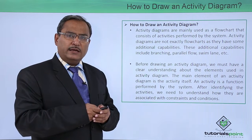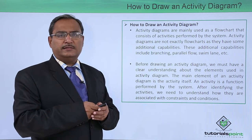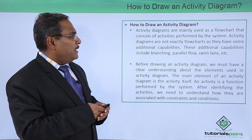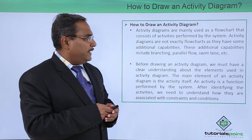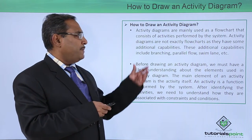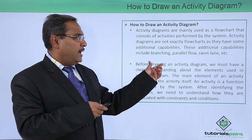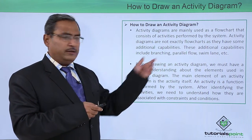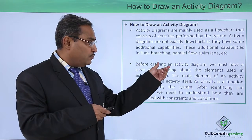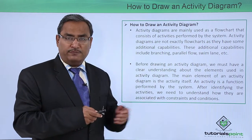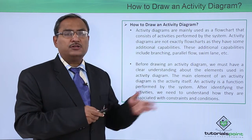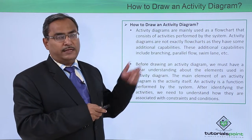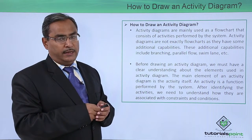What is an activity? An activity is nothing but one operation in a system. Activity diagrams are not exactly flowcharts, as they have some additional capabilities. These additional capabilities include branching, parallel flow, swim lane, sequential flow, and so on. These are the extra features which were absent in flowcharts.